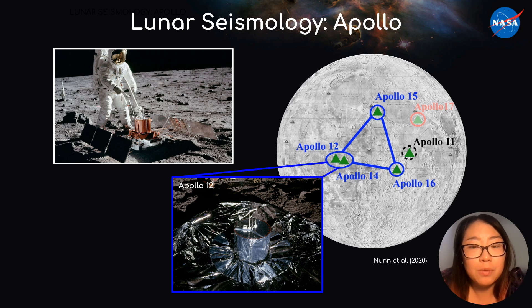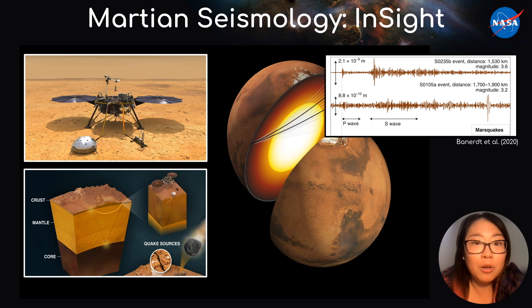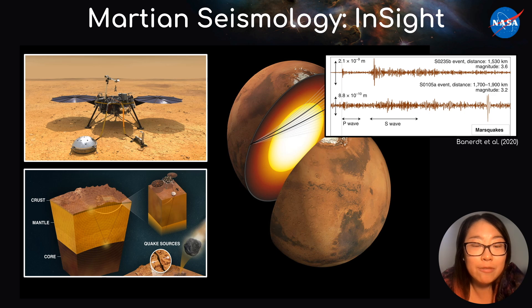These instruments recorded a variety of interesting signals, including meteorite impacts, explosions, and thousands of moonquakes. More recently, the InSight mission deployed a seismometer on Mars, leading to the discovery of hundreds of Marsquakes.